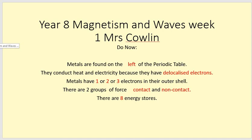OK, so here we go. Metals are found on the left of the periodic table. All you need to do is have a quick look on your periodic table and spot a metal and that would help you sort that one out. They conduct heat and electricity because they have delocalised electrons. That's ones that can move around. Metals have one or two or three electrons in their outer shell.